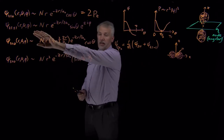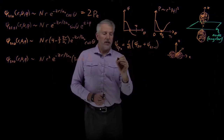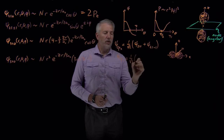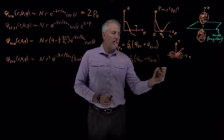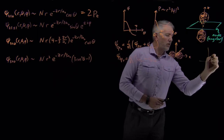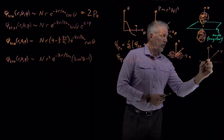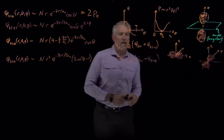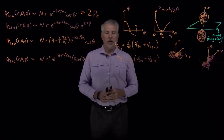The m equals 1 and m equals negative 1 wave functions are not themselves the 2px and 2py wave functions. If I take the sum of them I get the 2px wave function. If I take the difference — psi 2,1,1 minus psi 2,1,negative 1 times 1 over square root of 2 — that gives the 2py wave function, which points into the third dimension. So the 2px and 2py wave functions are linear combinations of the m equals 1 and m equals negative 1 wave functions.